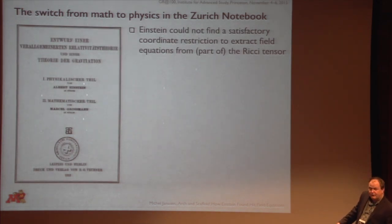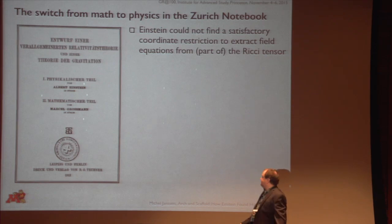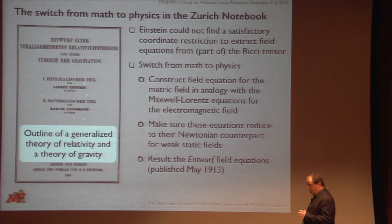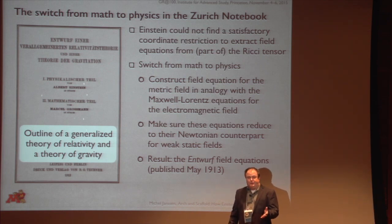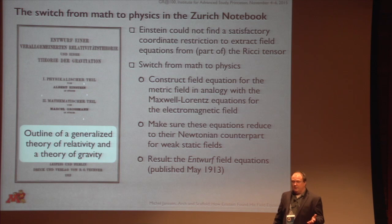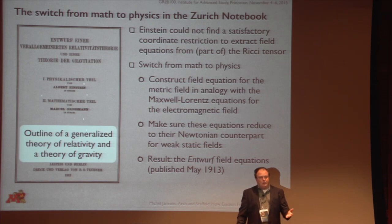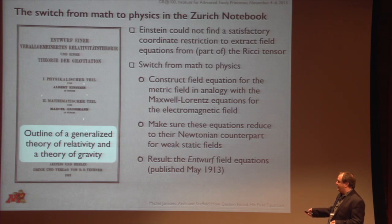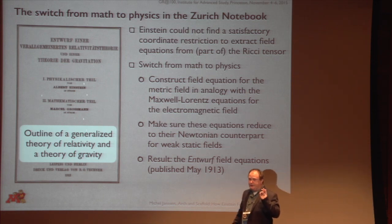As I said, he couldn't find anything — even with that relaxation — that worked. So he switched from math to physics. He constructed field equations for this new gravitational field in analogy with the only field theory available at the time, namely the Maxwell-Lorentz theory for the electromagnetic field in its special-relativistic reformulation. You make sure from the get-go that these equations satisfy the physical requirements: they give the right Newtonian limit and they satisfy energy-momentum conservation. The result was published in the paper by Einstein for the physics, Grossmann for the mathematics: 'Outline of a Generalized Theory of Relativity and a Theory of Gravity' — the 'generalized' indicating that they didn't quite know how general this theory was.